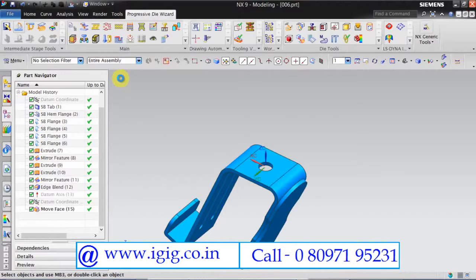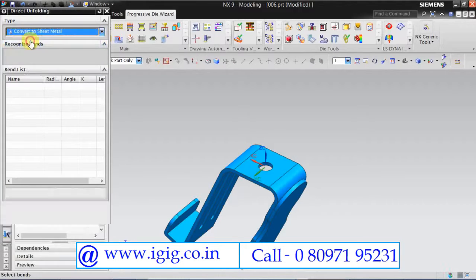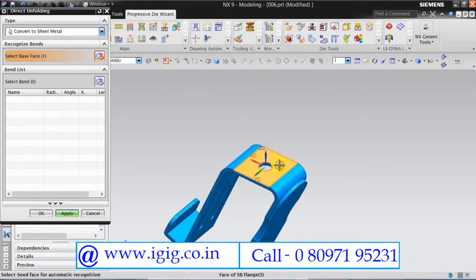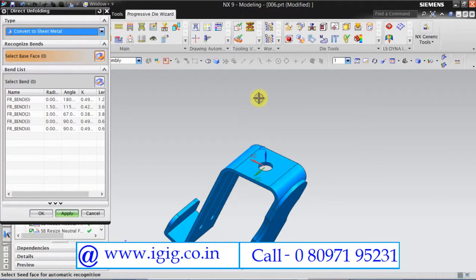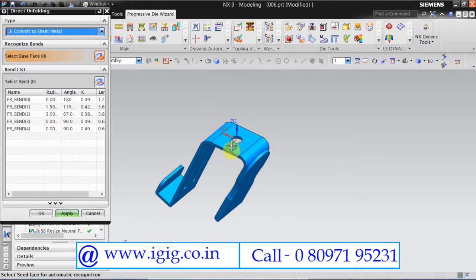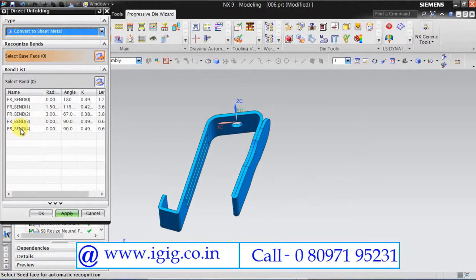Convert this to a sheet metal. Select the face and click apply. And these are the bends identified by UG.